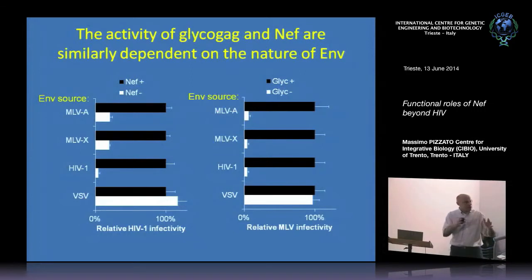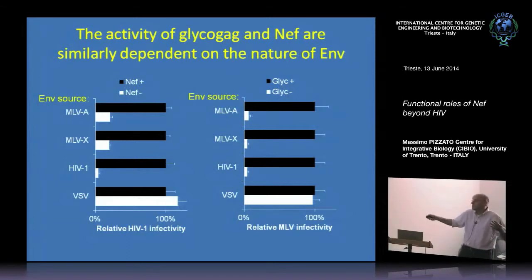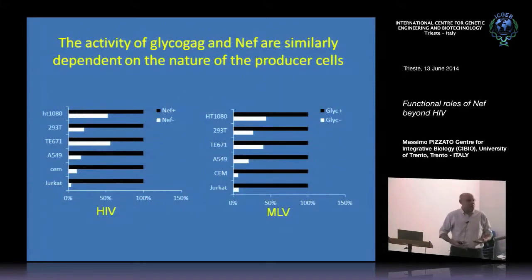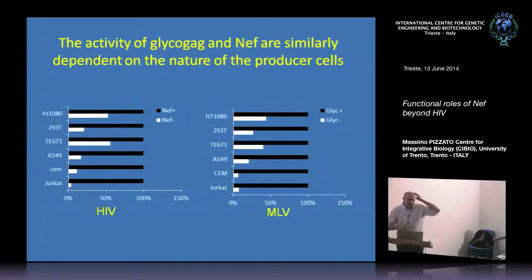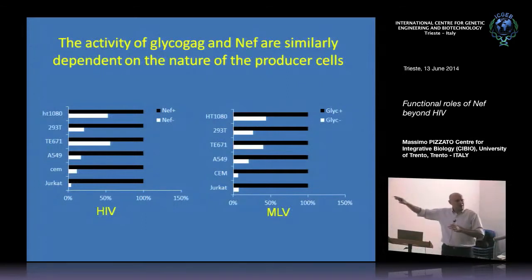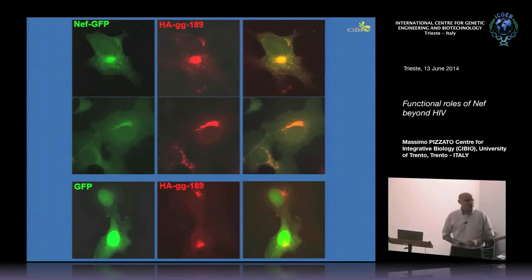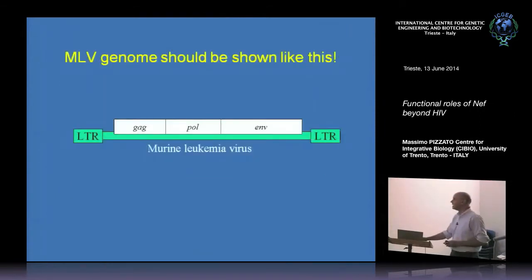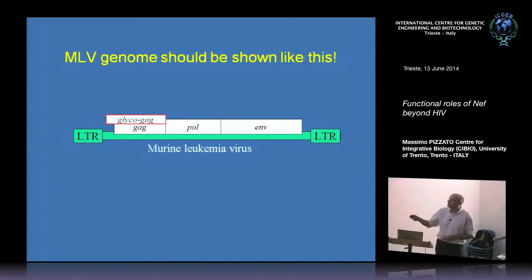There is a specular activity that depends on the envelope glycoprotein — something I showed before. With VSV-G, there's no need for glycoGAG on MLV nor NEF on HIV. It still depends on the cell type where the virus is produced. We think there is a common host factor that regulates the requirement for these two proteins in these two different viruses, and they localize in exactly the same places inside the cell. Astonishingly, there is not a slight hint of sequence conservation — yet the function is essentially identical.